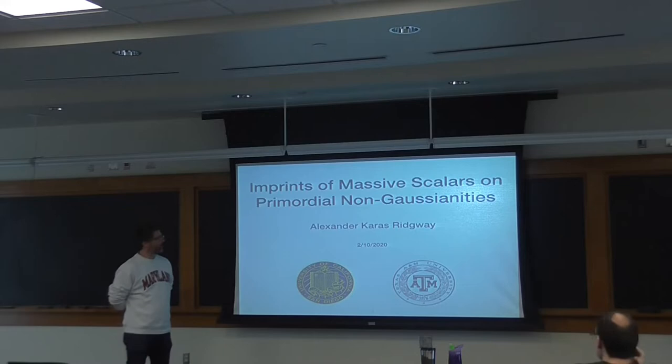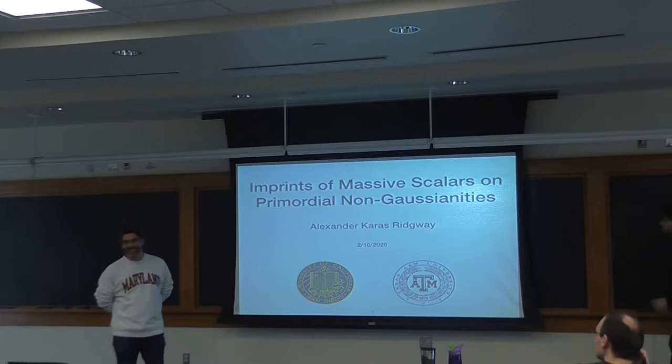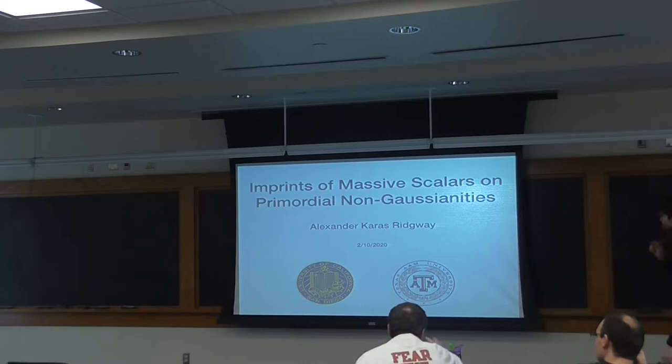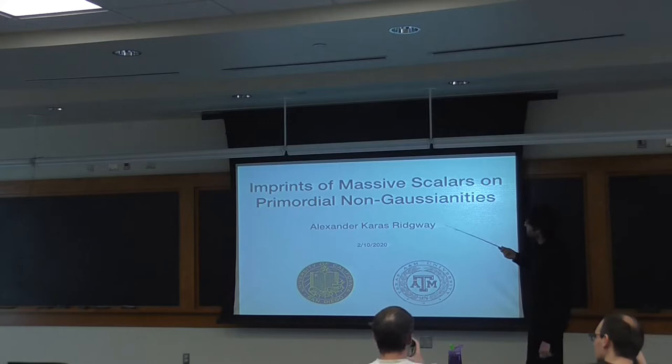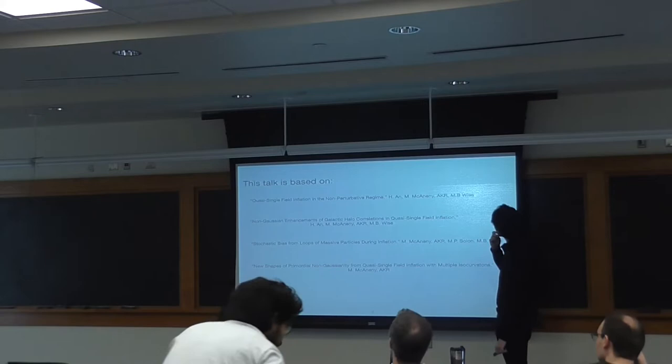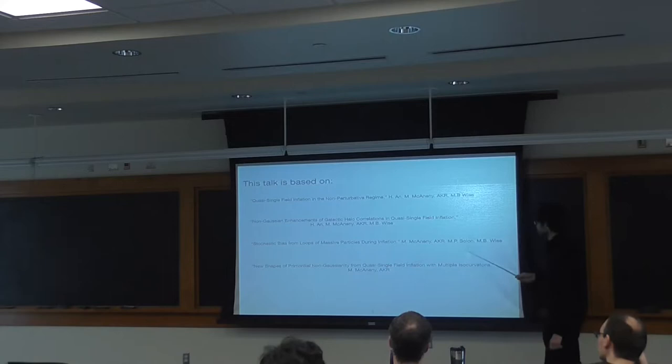We're going to have Alec Ridgway. He will be telling us about something slightly different than our usual affair. He's done a couple of food theories and such. This one will be about imprints of massive scalars on primordial non-Gaussianities. Thanks Will, and thank you for the invitation. It's a pleasure to talk about some of my work on primordial non-Gaussianities, which have occurred in the hypothetical inflationary era. All the original stuff I'll be talking about is based off of these four papers, which I did with my collaborators: Hi-Pan Onn, Michael McEnany, Mark Wise, and Daniel Saban.